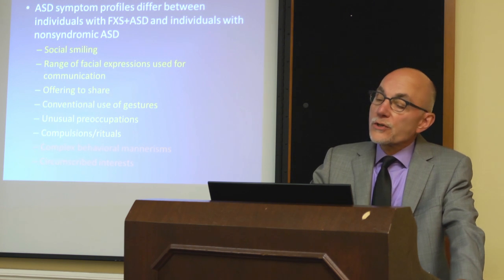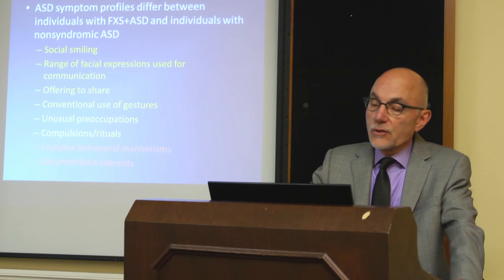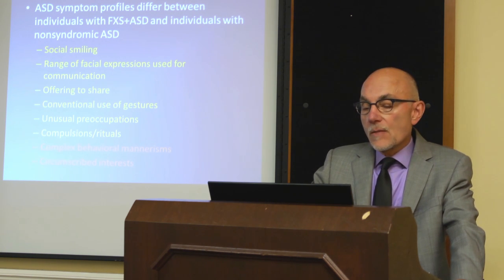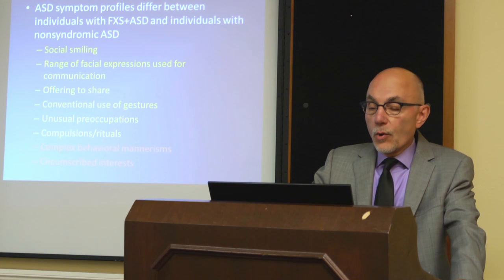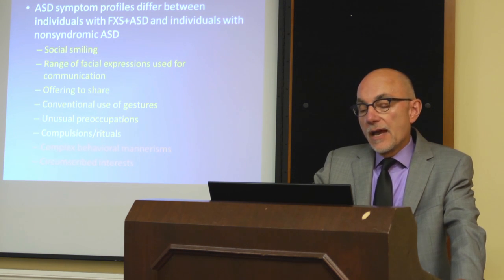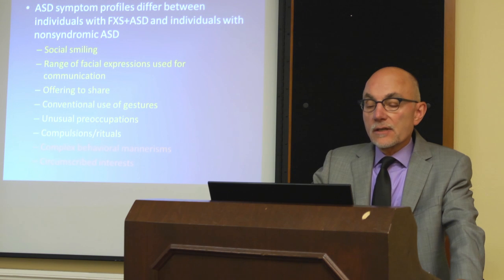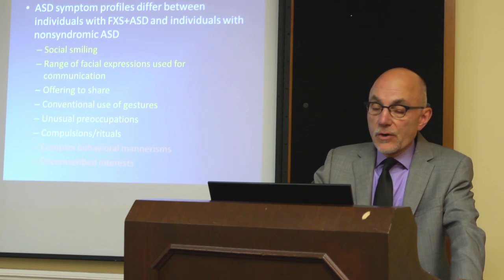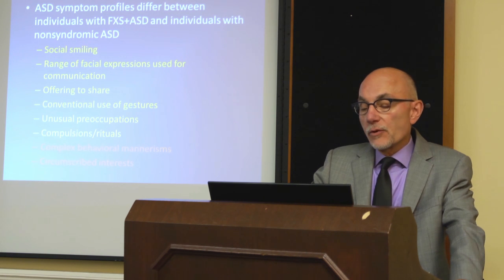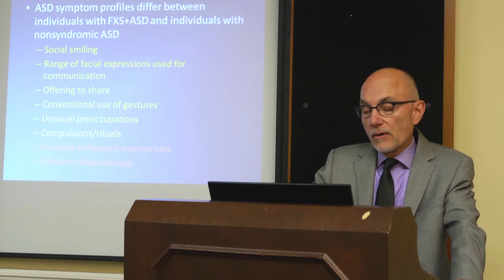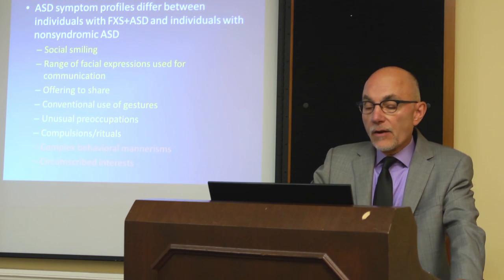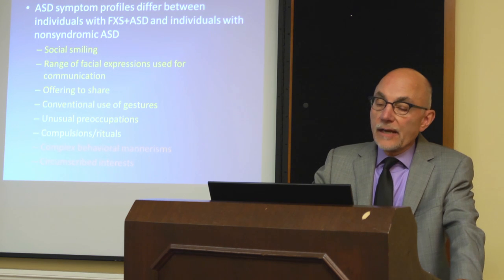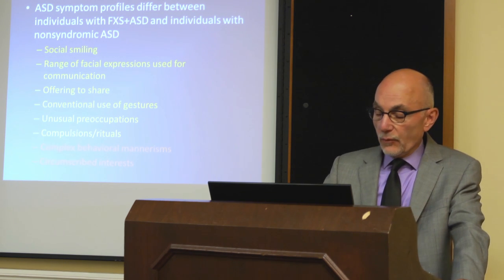Even though both groups met criteria for autism spectrum disorder, we saw more social smiling in individuals with fragile X syndrome, a greater range of facial expressions used for communication, more offering to share, more conventional use of gestures, and fewer unusual preoccupations, compulsions, and rituals. At the same time, we saw more complex behavioral mannerisms in people with fragile X and the comorbid autism diagnosis, and also more circumscribed interests. So even though both groups had the same diagnosis, they had very different symptom profiles.